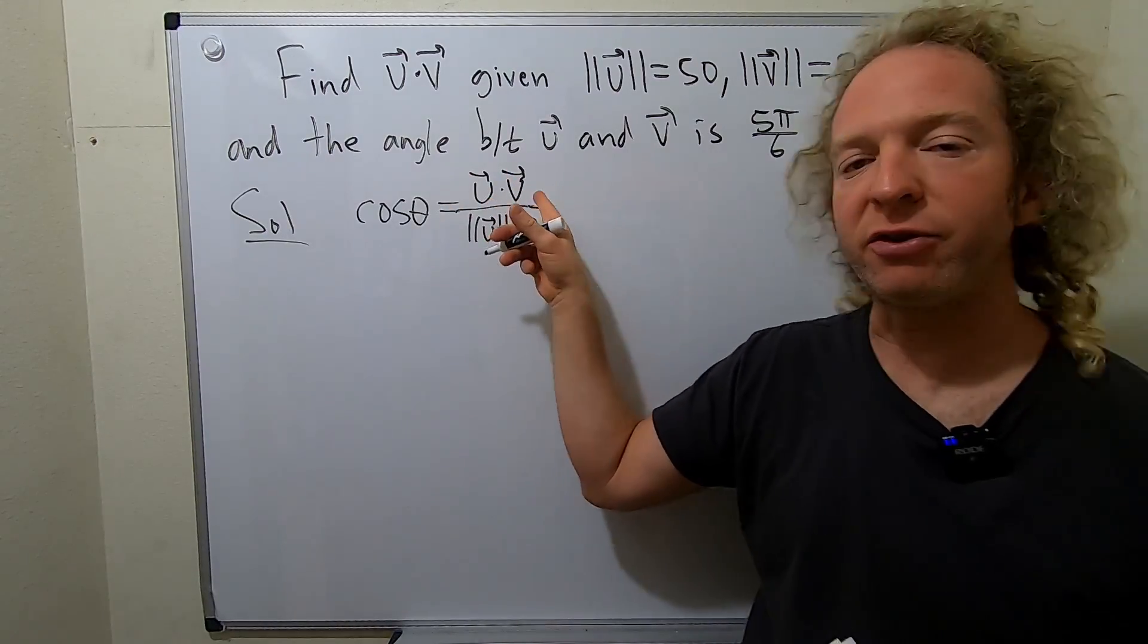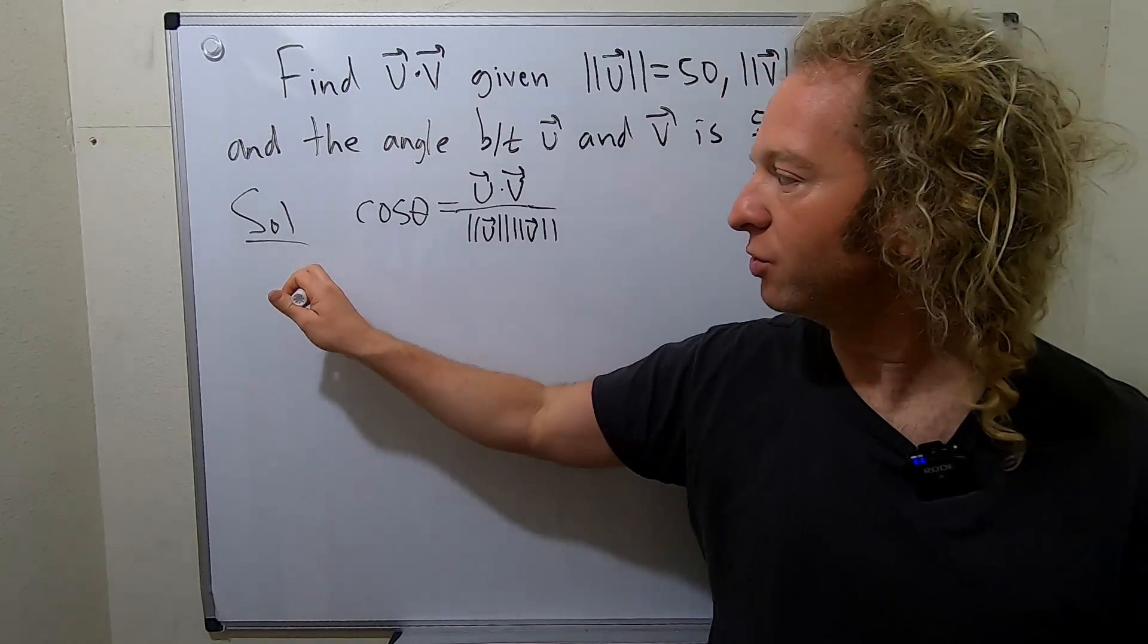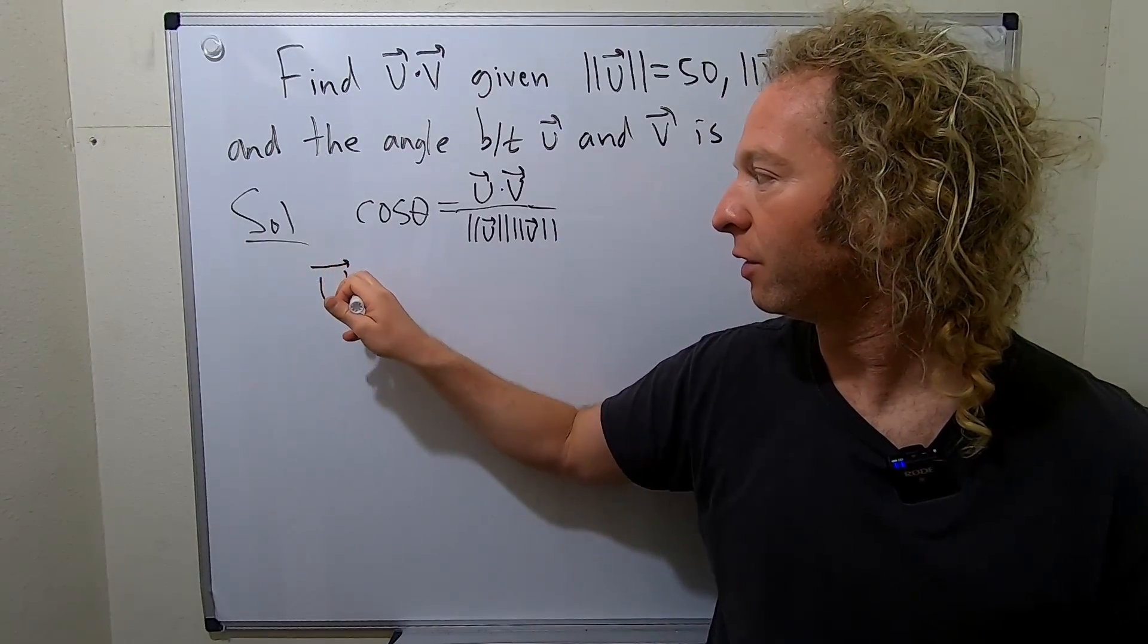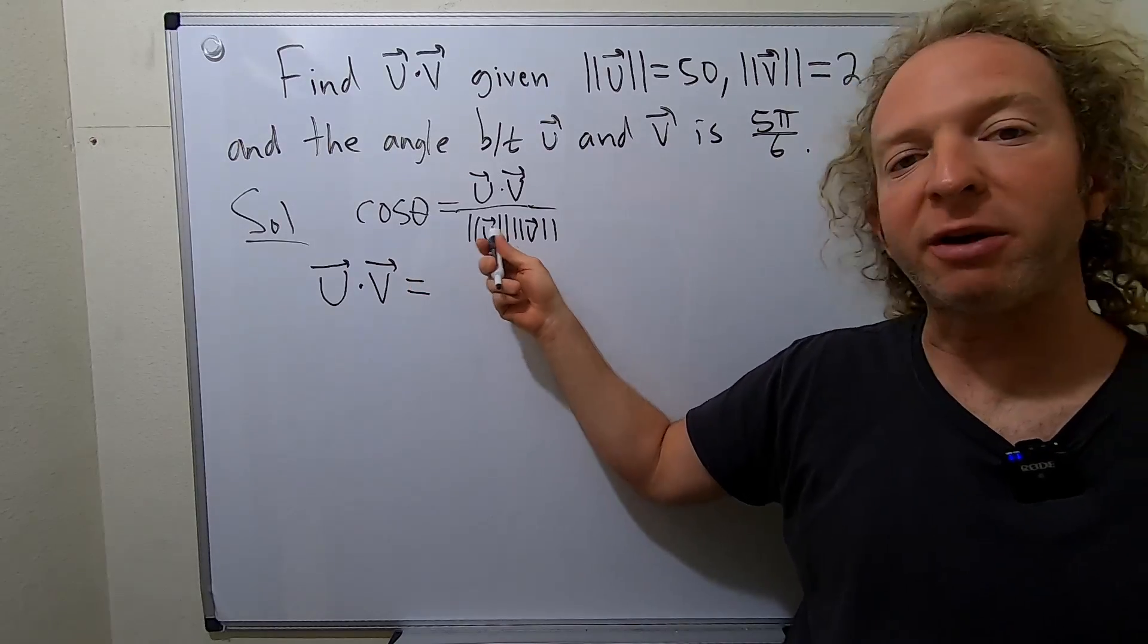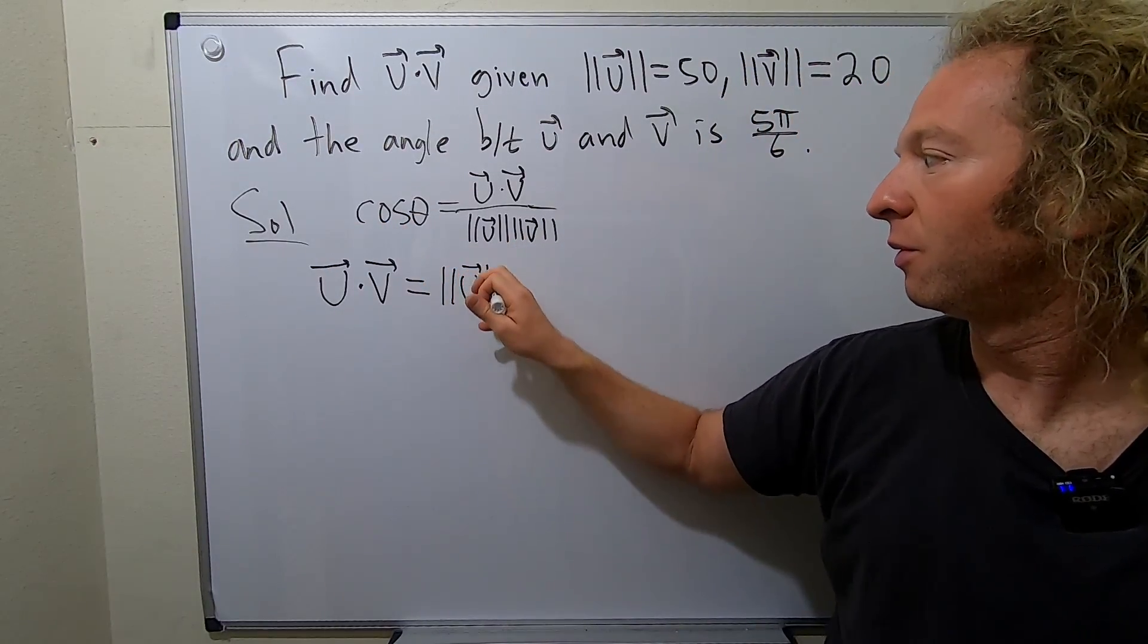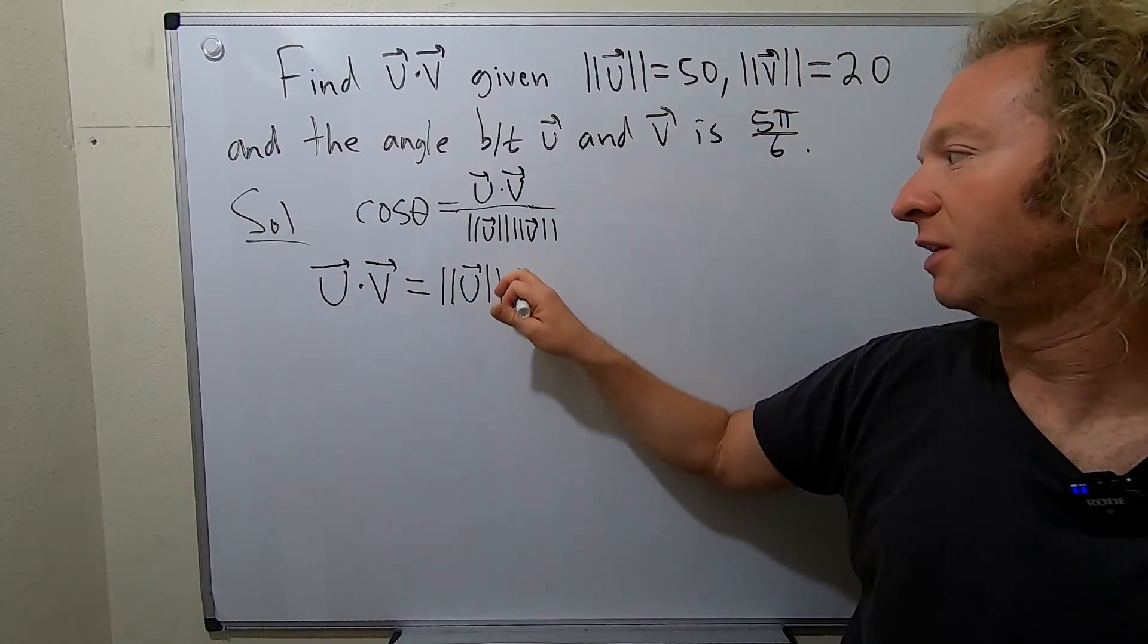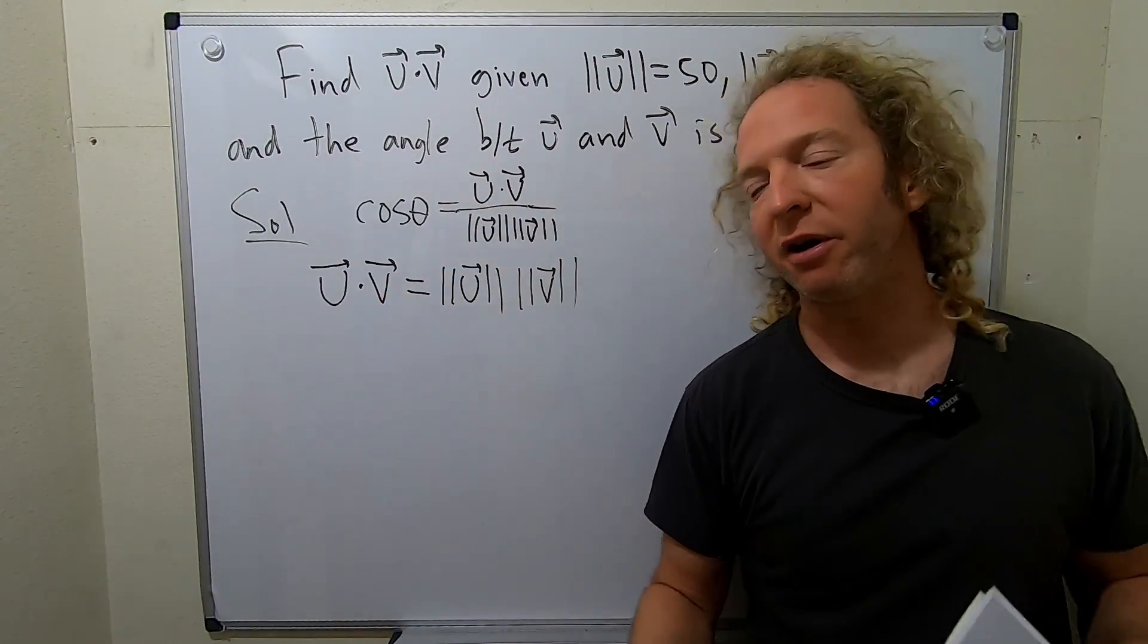So you can solve this for u dot v by multiplying both sides by the bottom piece here. So we have u dot v equals, and then multiplying by this on both sides, we get the magnitude of u times the magnitude of v. And then times the cosine of theta.